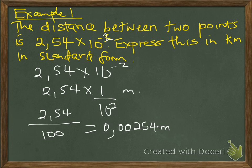It therefore means this expression will be 0.00254 meters. This is our answer, this is our actual distance. Then we want to express this in kilometers in standard form. We know that 1 kilometer is equal to 1,000 meters. Therefore, we are going to divide this expression by 1,000 to express it in kilometers.